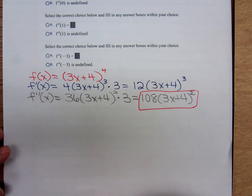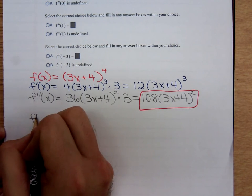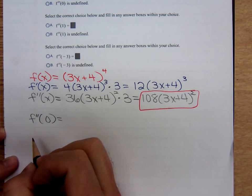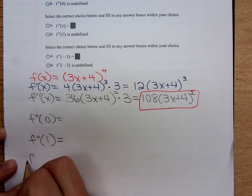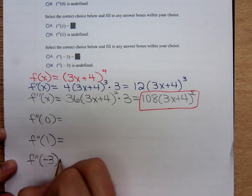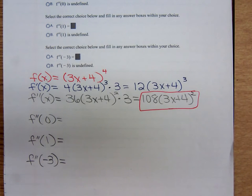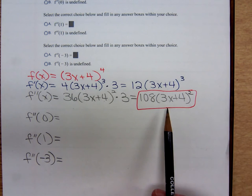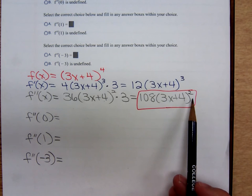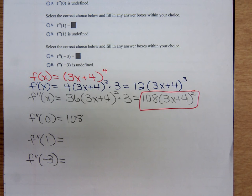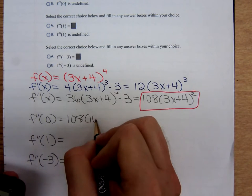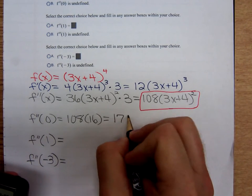Now they want us to find f double prime evaluated at 0, f double prime evaluated at 1, and f double prime evaluated at negative 3. Plugging in 0 for x, we get 0 + 4, that's 4. 4 squared is 16.